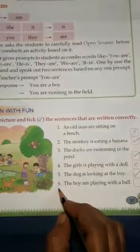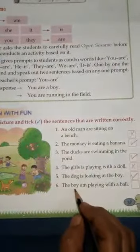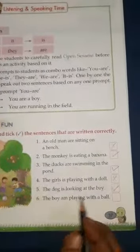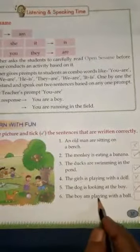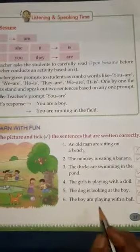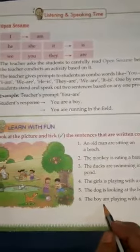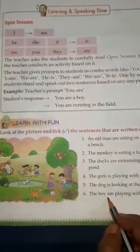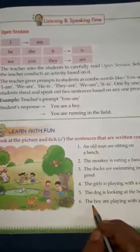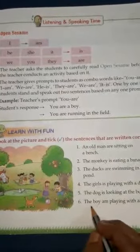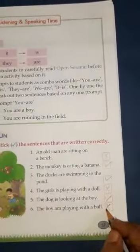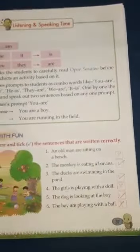Now, see number six: The boy am playing with a ball. Is it a correct sentence? No. 'Am' always comes with 'I' only. 'The boy am' is wrong. So this is a wrong sentence.